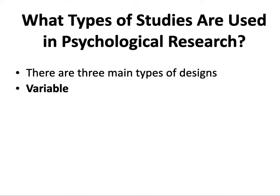Picking up where we left off, this is Part 2 of Chapter 2, Research Methodology. What types of studies are used in psychological research? There are three main types of designs: descriptive studies, correlational studies, and experimental studies.